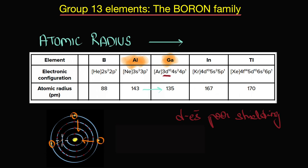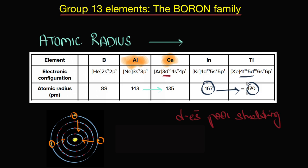Because d electrons cannot screen the outer electrons from the nuclear pull, this results in a decrease in the atomic radius from aluminium to gallium. Something similar occurs from indium to thallium — we should expect a much larger increase in atomic radius, but the increase is very nominal. This is again due to the poor shielding effect of both f and d electrons, which completely offsets the expected increase.